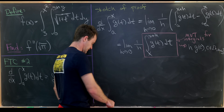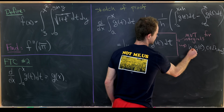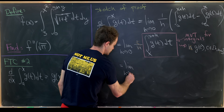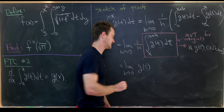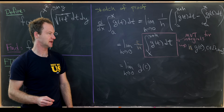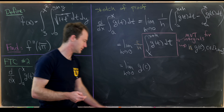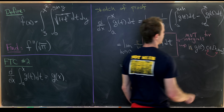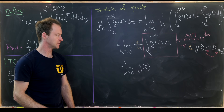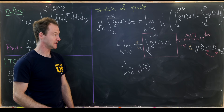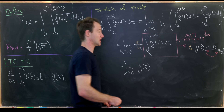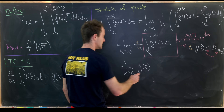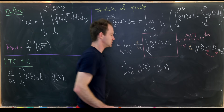Notice that c has a variable component because c comes from the interval between x and x plus h. As we let h approach zero, c must approach x because we squeeze this interval until it's just a singleton. So we're left with g(x), just as needed.